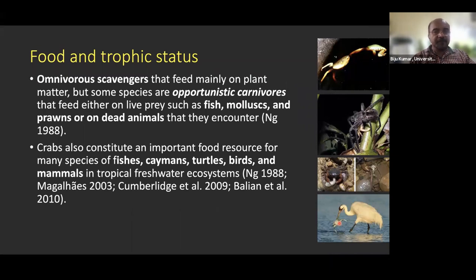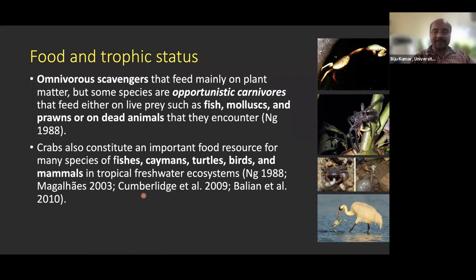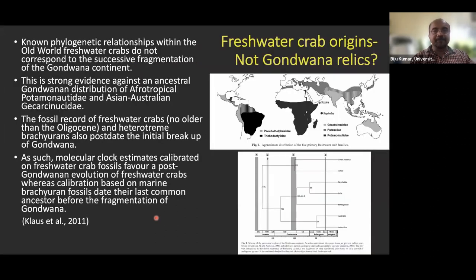Regarding their position in the food web, freshwater crabs are primarily omnivorous scavengers that feed mainly on plant matter, though some are opportunistic carnivores feeding on fish, molluscs, prawns, and dead animals. They also constitute an important food resource for fishes, caimans, crocodiles, turtles, birds, and mammals, giving them a critical role in freshwater ecosystems.